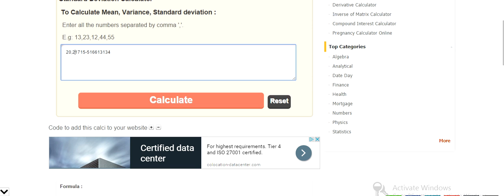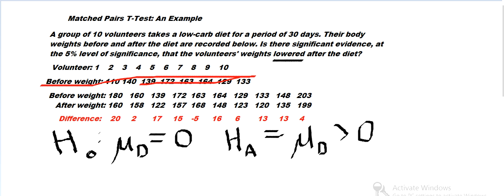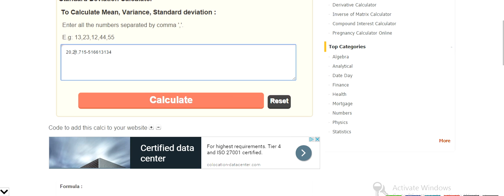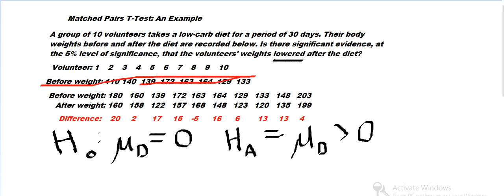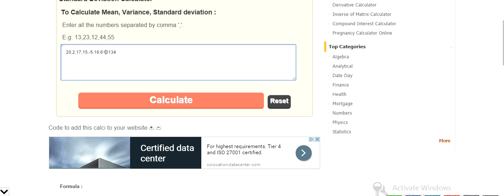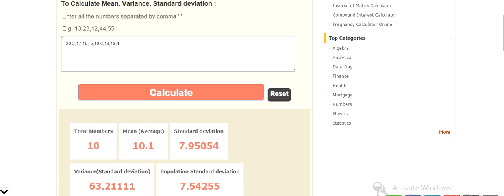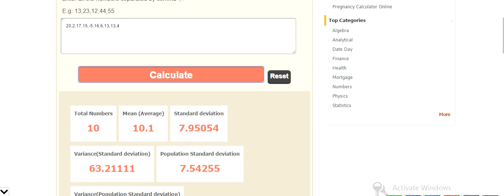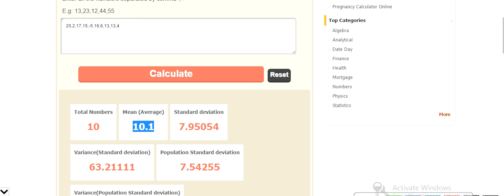So 20, 2, make sure I get this right, 17, 15, minus 5, 16, 6, 13, 13, 4. Got those right.